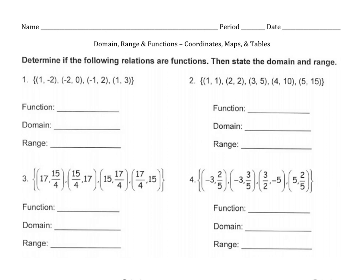We may also see functions written not in maps but in ordered pairs. Here we have a set of ordered pairs and we're asked first if it's a function, and then what the domain and range are. In this first example, one goes to negative two, negative two goes to zero, negative one goes to two, and one goes to three. Notice that one appears in the first and fourth ordered pairs going to two different places — that breaks one of our conditions. So no, this is not a function. The domain is all possible inputs or x-values.